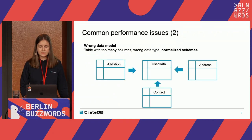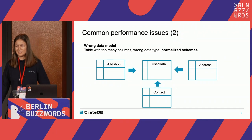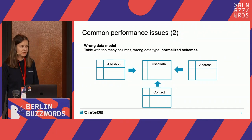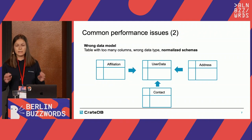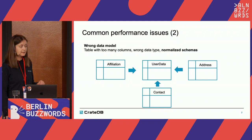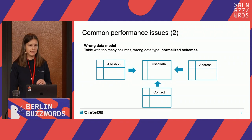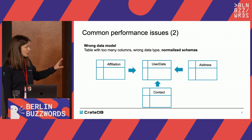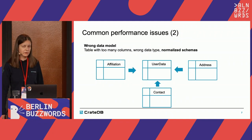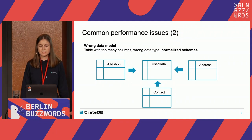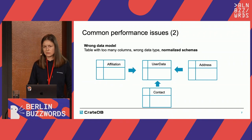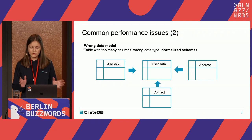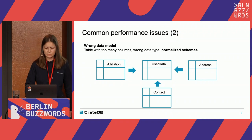Another performance issue we've seen very often is using distributed databases with data models that are highly normalized. Executing joins in distributed databases — and especially in CrayDB — is possible and can be done very fast if used correctly. But joins are a tricky part. You should not run joins on highly normalized schemas. Besides schemas, you also need to be careful about your data model in general, which applies to all databases.